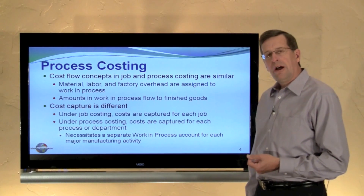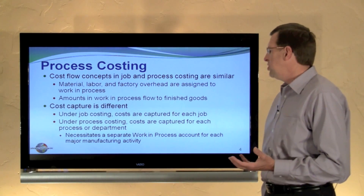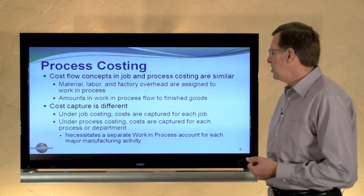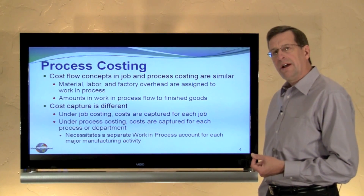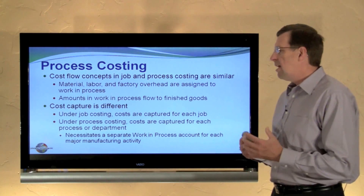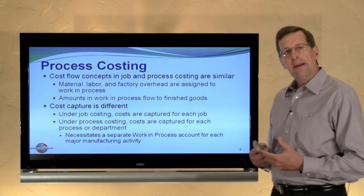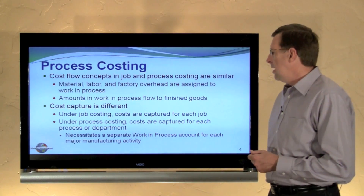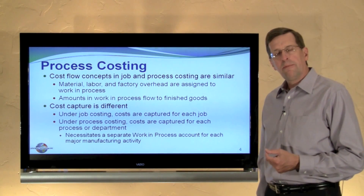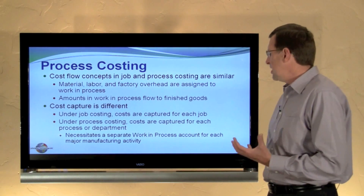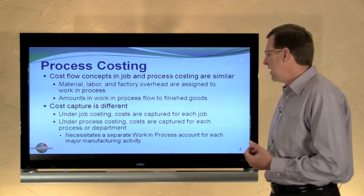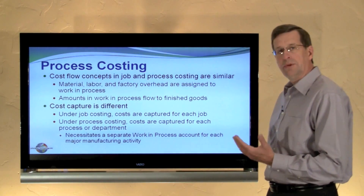Recall under job costing, costs were captured for each job using a job cost sheet. Whereas under process costing, we're going to look more at the processes — costs are typically captured by process or department. This will necessitate a separate work-in-process account for each production activity or each process or major manufacturing activity, as we will see.